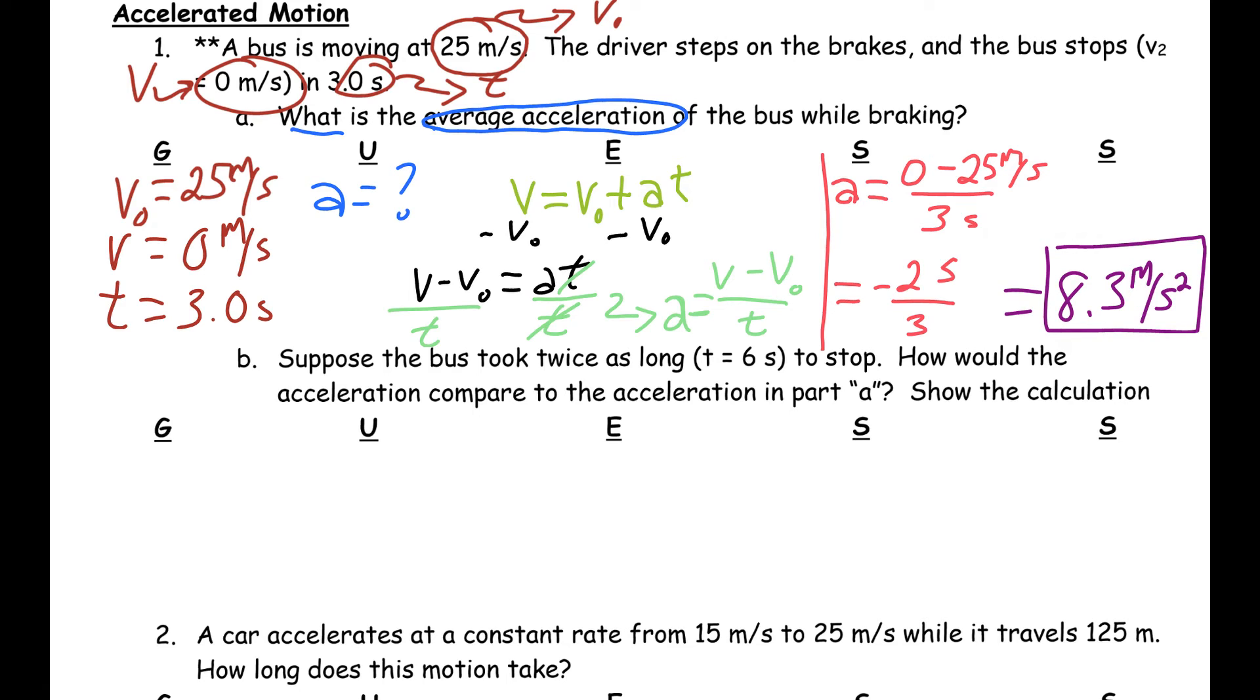Now, part B, we continue that, and it says, suppose that the bus took twice as long. Instead of taking 3 seconds, we're going to take 6 seconds to stop. How would the acceleration compare to the acceleration in part A? Well, you know if it's going to take more time to stop, that means that the acceleration should be less. So, 8.3 was our initial acceleration. Our new acceleration will be something less than that because it's taking more time. And we have all of the same values.